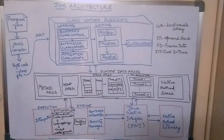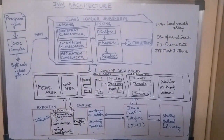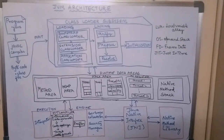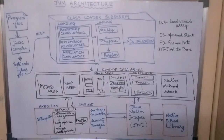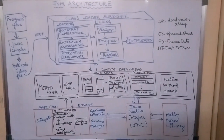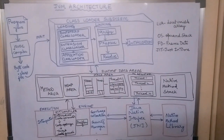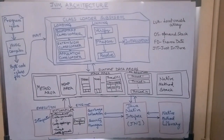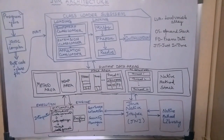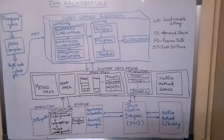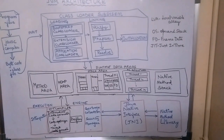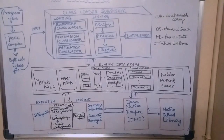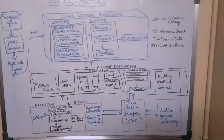The program that you write will be saved in the .java file, and that .java file is given to the compiler which is javac. The javac compiler will produce the bytecode, and the bytecode will be saved in the .class file. This .class file will be given as input into the JVM. There are three modules in the JVM: the class loader subsystem, the runtime data areas, and the execution engine.